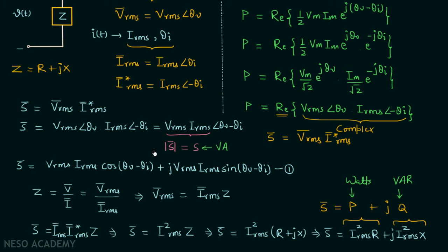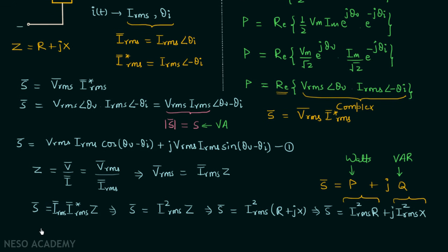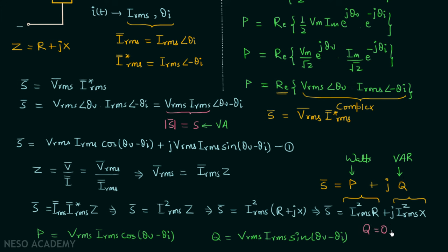Comparing with equation (1): average power P = V_RMS I_RMS cos(θ_V − θ_I), and reactive power Q = V_RMS I_RMS sin(θ_V − θ_I). When Q = 0, the load is purely resistive and the power factor equals 1. When Q > 0, the load is inductive and the power factor is lagging. When Q < 0, the load is capacitive and the power factor is leading.